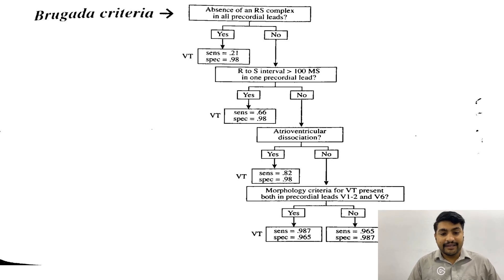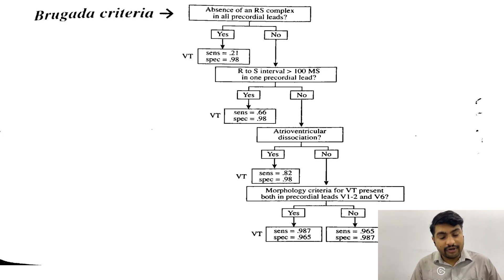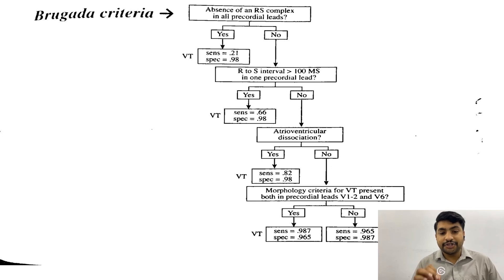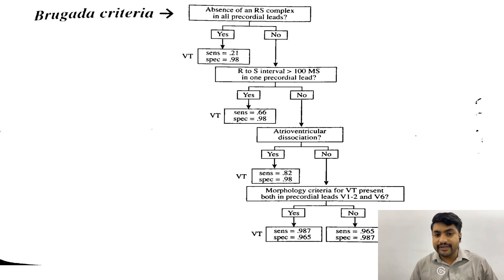If there is no AV dissociation, we go to the next step: the morphology of V1 to V6, the precordial leads. The morphology criteria for VT should be fulfilled — if it is, it is VT; if not, we call it SVT with aberrancy. For VT morphology: it should not resemble any bundle branch block — not left bundle branch block or right bundle branch block. The axis should be northwest axis, and AVR should be positive.